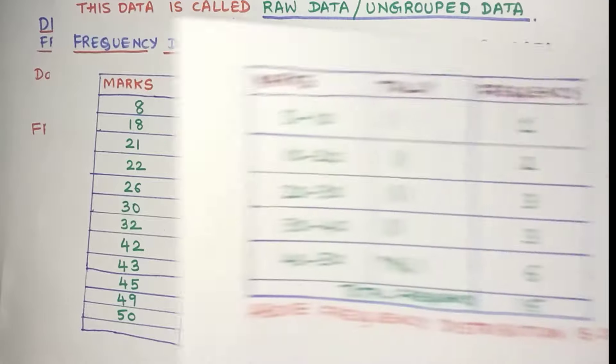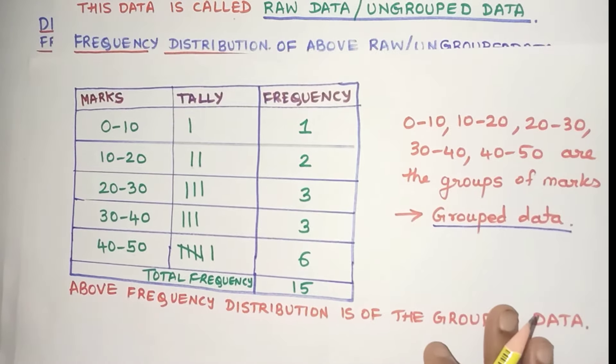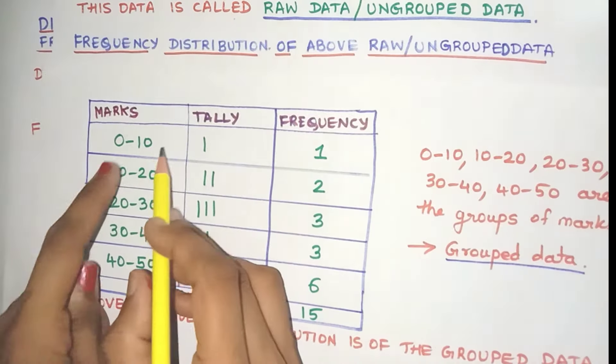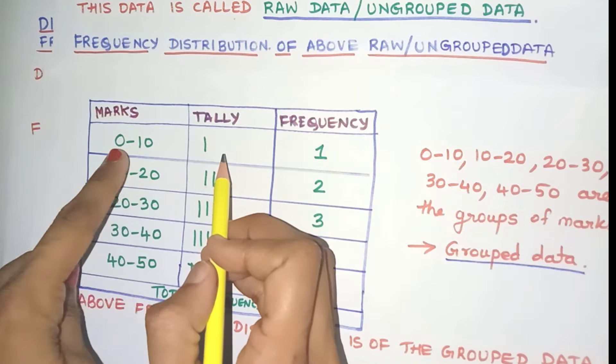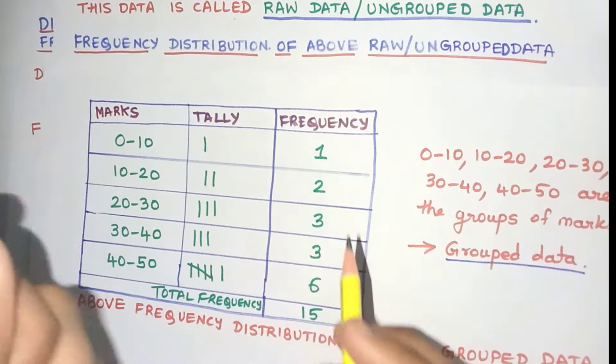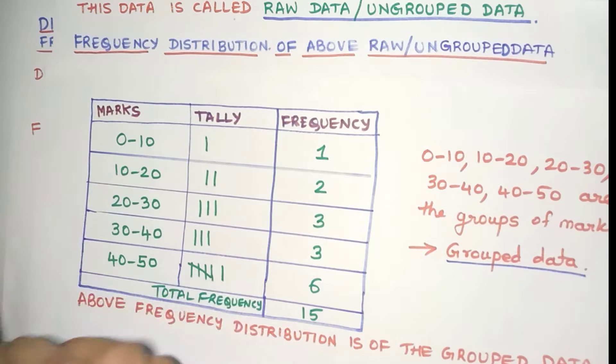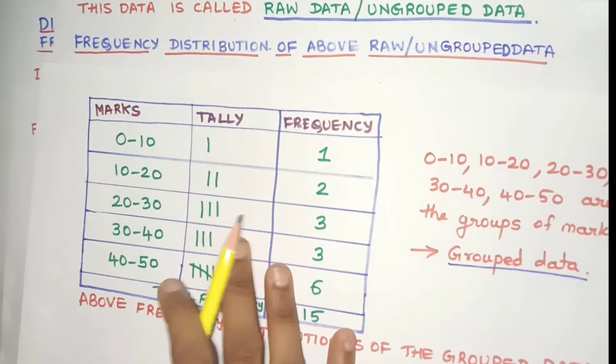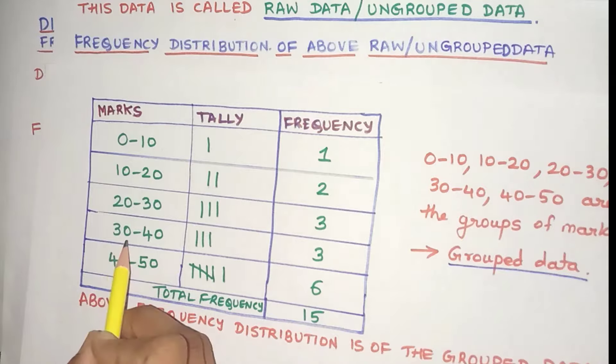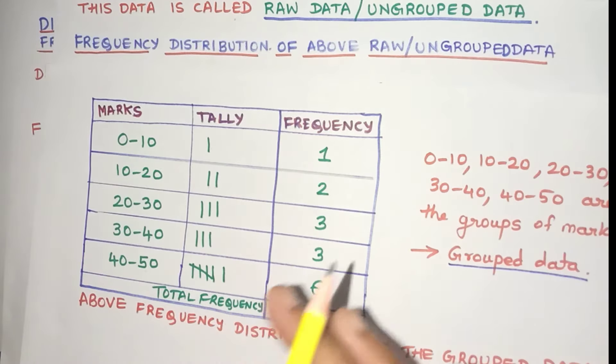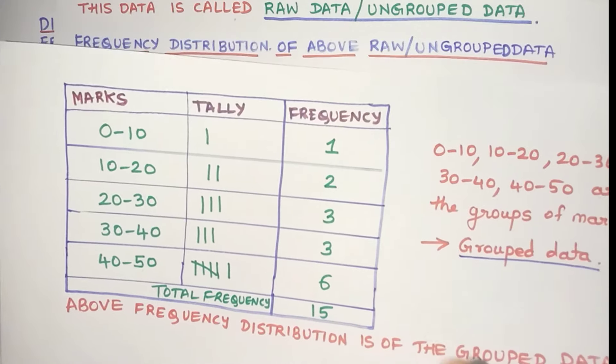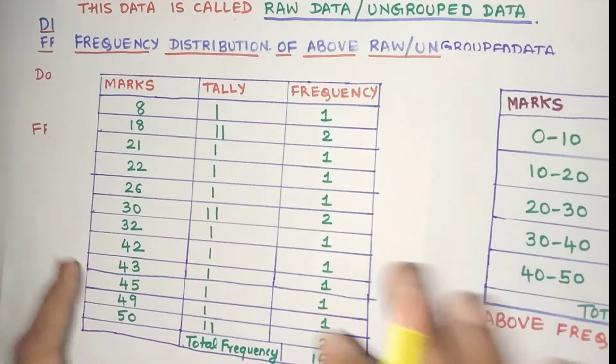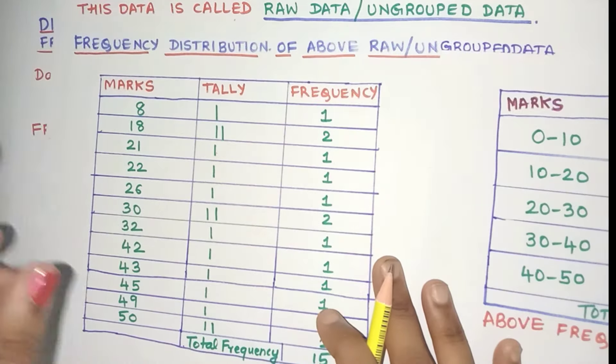Now one disadvantage of grouped data is that you lose the individual marks. Did you observe there is one student who has got marks from 0 to 10, but what is that mark? We no longer know in grouped data. Here again, there are three students who have scored between 30 to 40, but what are those three individual marks? That information is totally lost. Whereas in ungrouped data, we have individual marks of each and every student.